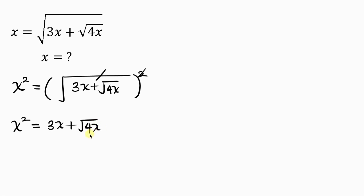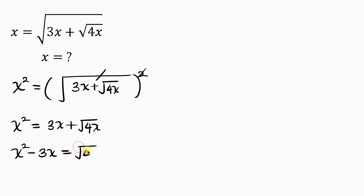Our next step will be to move 3x to the left hand side. So as 3x crosses to the left it becomes minus 3x, giving us x squared minus 3x equal to the square root of 4x.